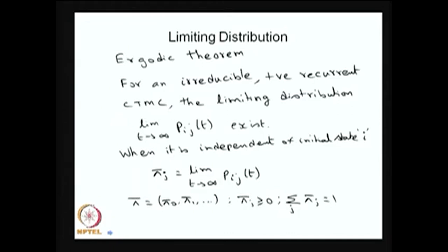Whenever you have a dynamical system that is an irreducible model and all the states are positive recurrent — meaning the mean recurrence time is going to be a finite value — then that system is called an Ergodic system, and the Ergodic concept can be used. As t tends to infinity you can get the limiting distribution. For an Ergodic system, whatever seed you use for simulation, the initial condition does not matter to get the limiting distribution.